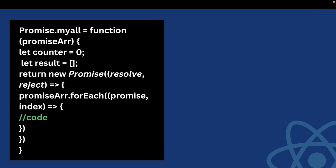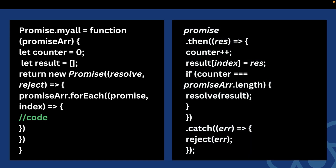Let's look at the polyfill code. We have Promise.myAll as a function taking a promiseArray as argument. There are two variables: a counter to track the number of resolved promises, and a results array to store results. Since Promise.all returns a promise, we return a promise and run a loop over the promiseArray. Inside the loop, if a promise is resolved we go into the then block, increment the counter, and store the result at that particular index to maintain order. If the counter equals promiseArray.length we resolve; otherwise if anything goes to catch we reject.